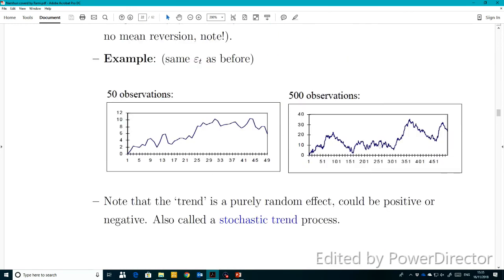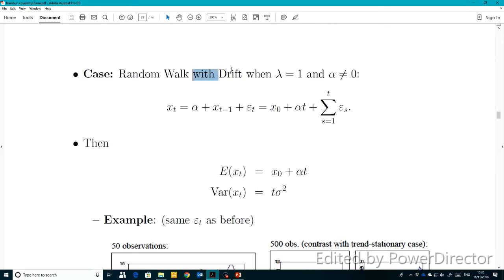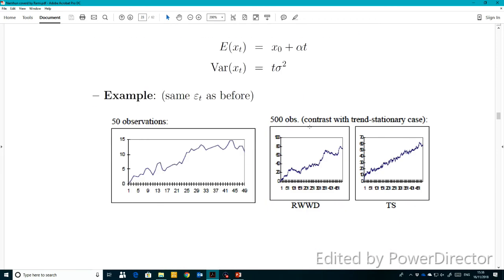Here are some simulations of a random walk which look very similar to the stock market prices, as I just showed you. Here, for example, when we're talking with drift, when λ equals 1, you can see that this is very similar to the structure.